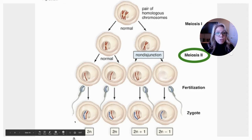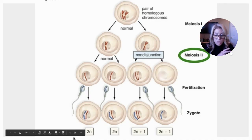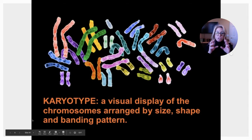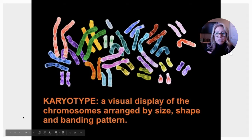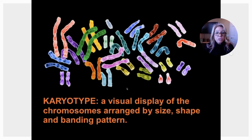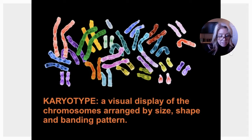That's how you can get the wrong chromosome number in your gametes, and then in the resulting zygote when those gametes fuse. A karyotype is a photographic image of the chromosomes. You can use a computer program to arrange them into their homologous pairs. The chromosomes appear in their rod shapes when they're going through mitosis or meiosis. A karyotype is a visual display of the chromosomes arranged by size, shape, and banding pattern.